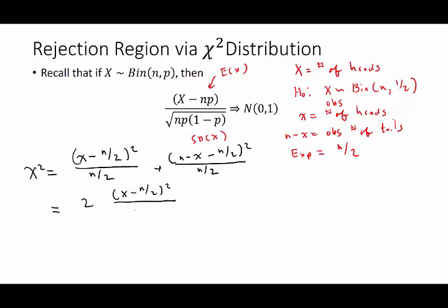So I can rewrite this as 2 times (X minus n over 2) squared divided by n over 2, which simplifies, although I guess simplify is a sort of relative term here, to (X minus n over 2) squared over n over 4.